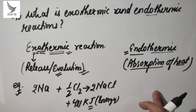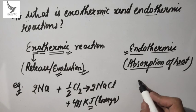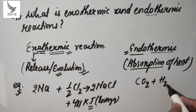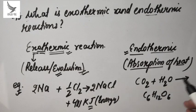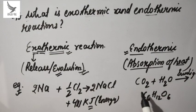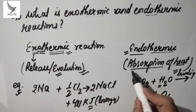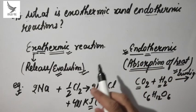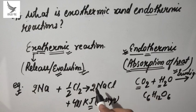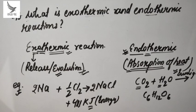For endothermic reactions, consider photosynthesis — you must have studied it — where carbon dioxide reacts with water to form glucose. To carry out this reaction, sunlight is required because photosynthesis cannot occur without sunlight. This means heat is being absorbed here, so photosynthesis is an example of an endothermic reaction. Endothermic reactions involve absorption of heat, and exothermic reactions involve evolution or release of heat. That was the third question.